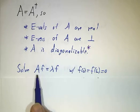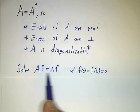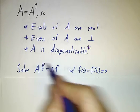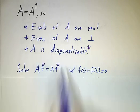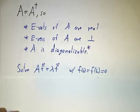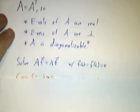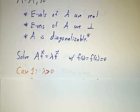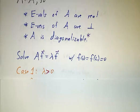We want to solve the equation af equals lambda f with our boundary conditions. We only need to consider real eigenvalues, so we check positive ones, negative ones, and zero.